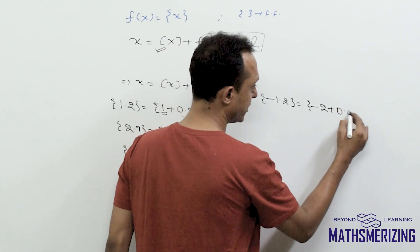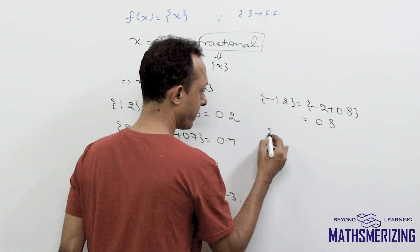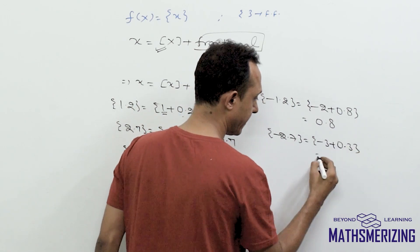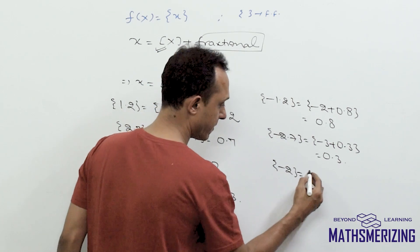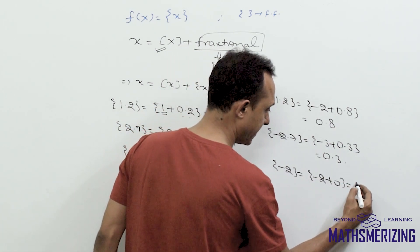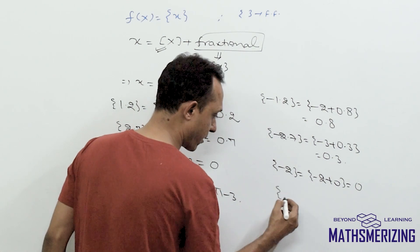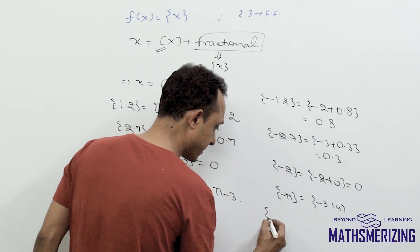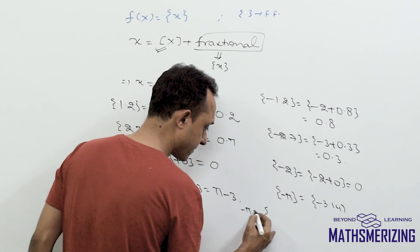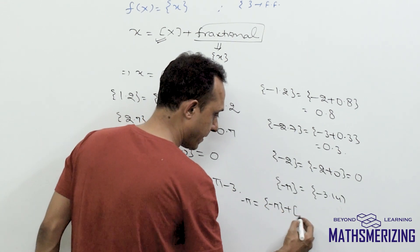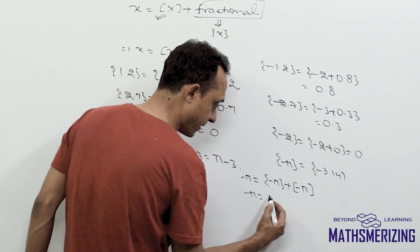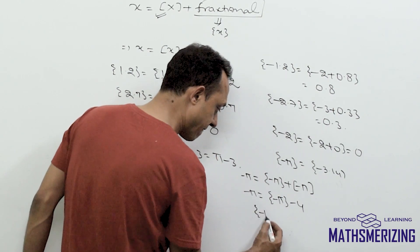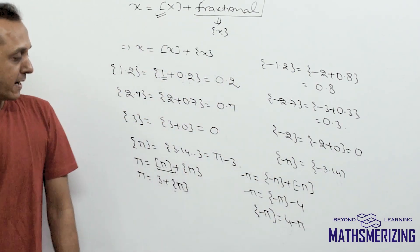For −2.7: that is −3 + 0.3, so {−2.7} = 0.3. For −2: it is −2 + 0, so {−2} = 0. For −π (which is −3.14...): {−π} = ⌊−π⌋ + fractional part, and ⌊−π⌋ = −4, so the fractional part of −π is −π − (−4) = 4 − π.